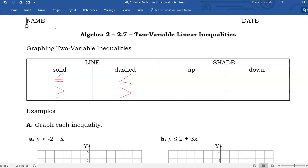If you see a greater than or a greater than or equal to, you will shade above the line. And if you see a less than or a less than or equal to, you will shade down or below the line.